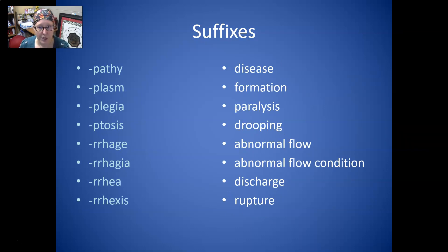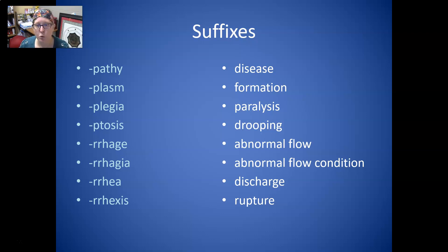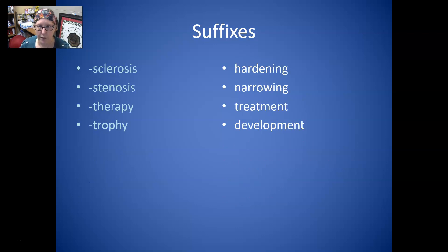Pathy is disease. Plasm is formation. Plegia is paralysis. Ptosis is drooping. Rrhage is abnormal flow. Rrhagia is abnormal flow condition. Rrhea is discharge. And rrhexis is rupture. Sclerosis is hardening. Stenosis is narrowing. Therapy is treatment. And trophy is development.